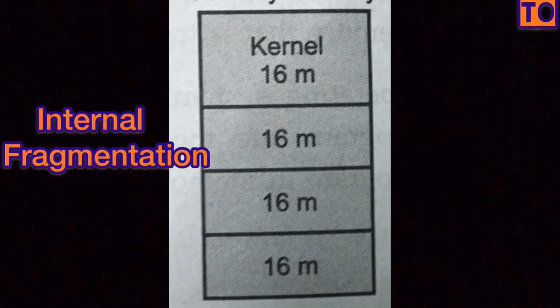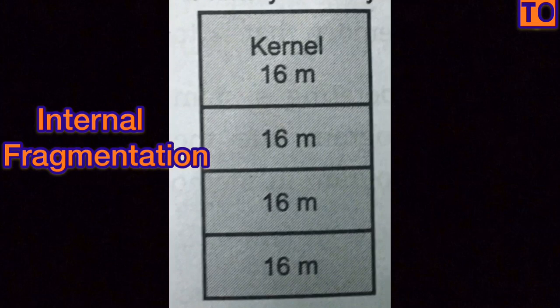In a block of memory, we will use internal fragmentation. In this space, we have a block of process. The system is maintained and is over-allocated. That means we have a problem — that is why we use internal fragmentation.